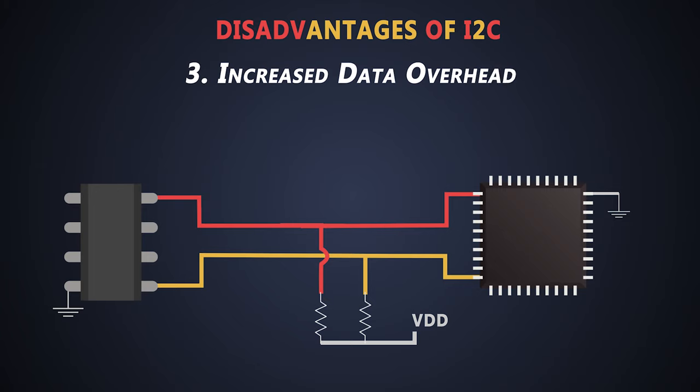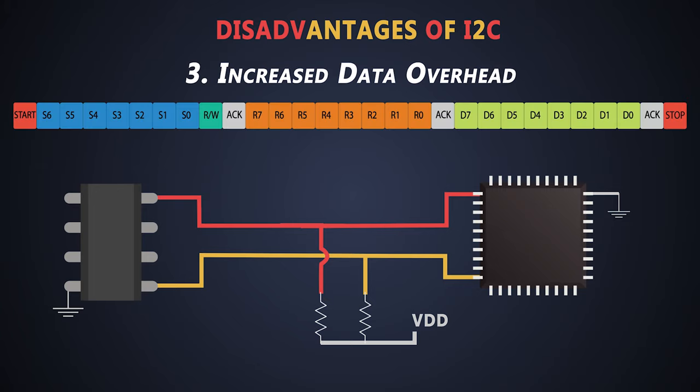For 8 bits of data, we need to send one start bit, one stop bit, acknowledgement bits, read/write bit, and 7-bit slave address. This increases data overhead for 8 bits, which reduces the data throughput. But in UART or SPI communication, we don't see such addresses or ACK/NAK bits, which increases the data throughput.